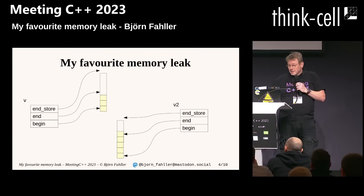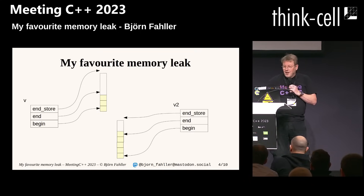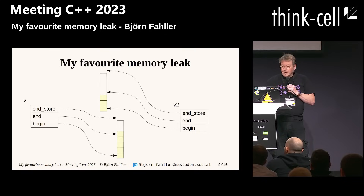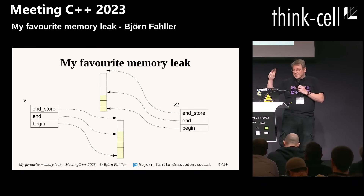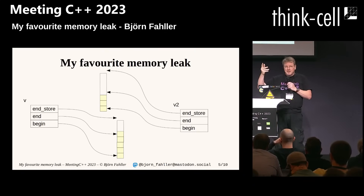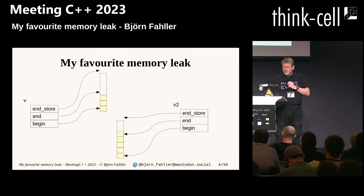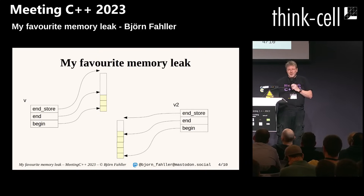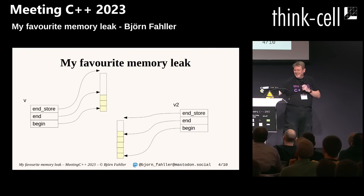Swapping two vectors is an amazing operation. All you do is swap the pointers — we don't touch the elements at all. Just swap, swap, swap.